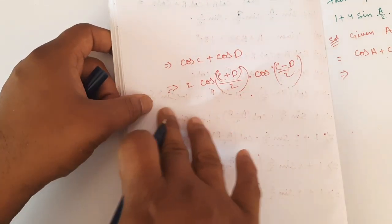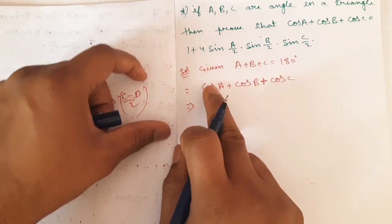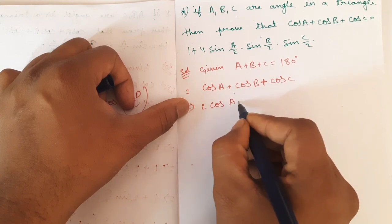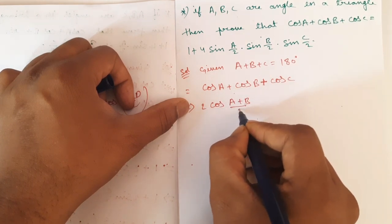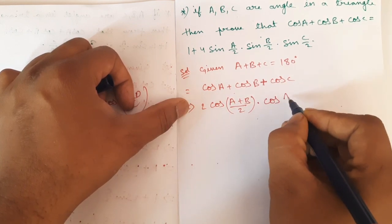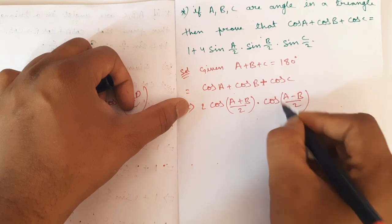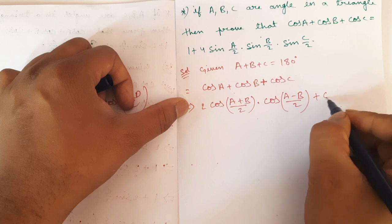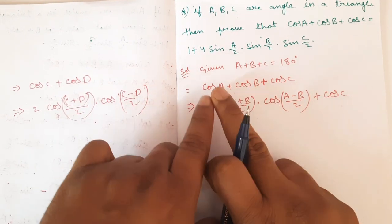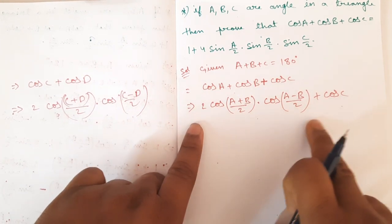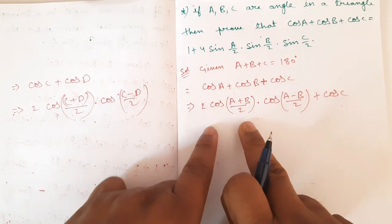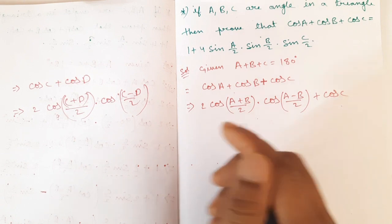Okay, so this is the formula. The formula is 2·cos((A+B)/2)·cos((A−B)/2), plus cos C. This is the cos C plus cos D formula. We have cosine and cosine, so this formula will match.